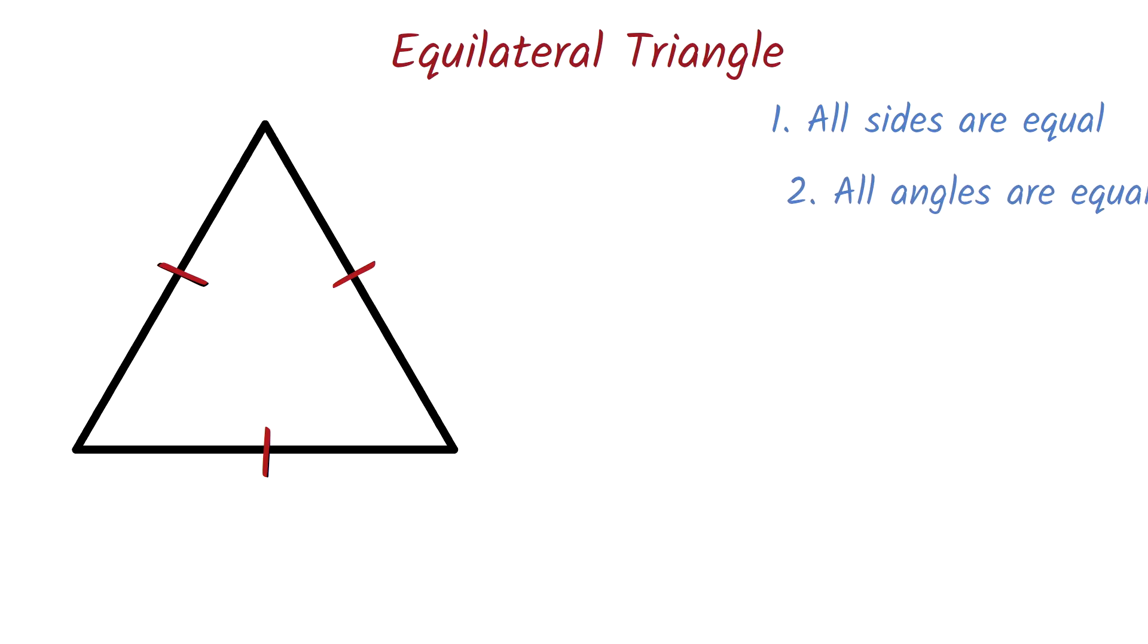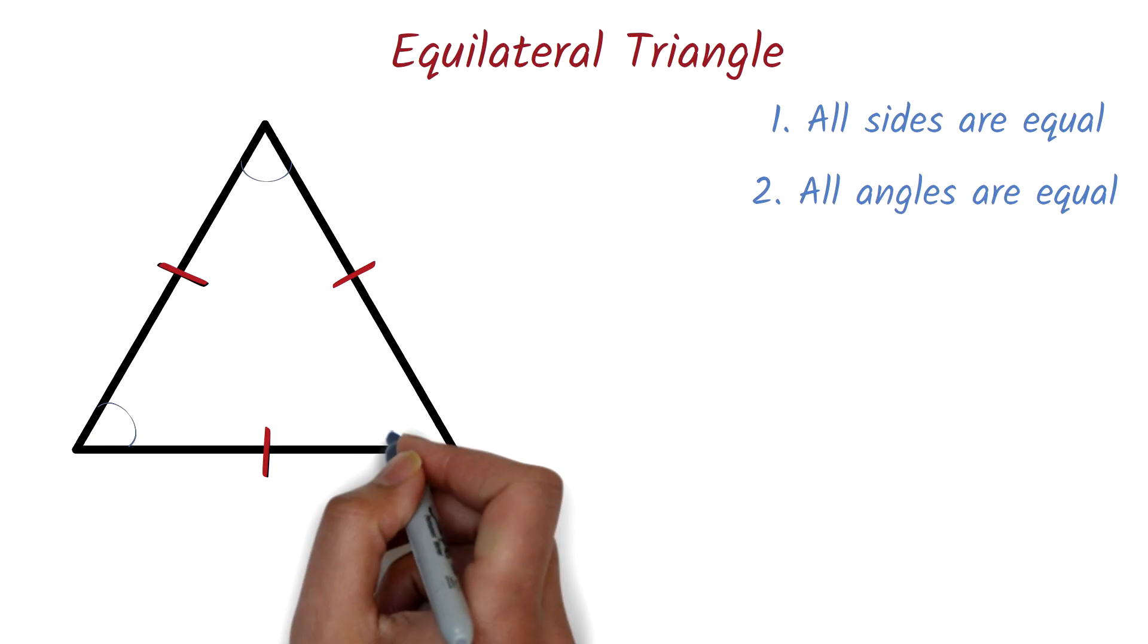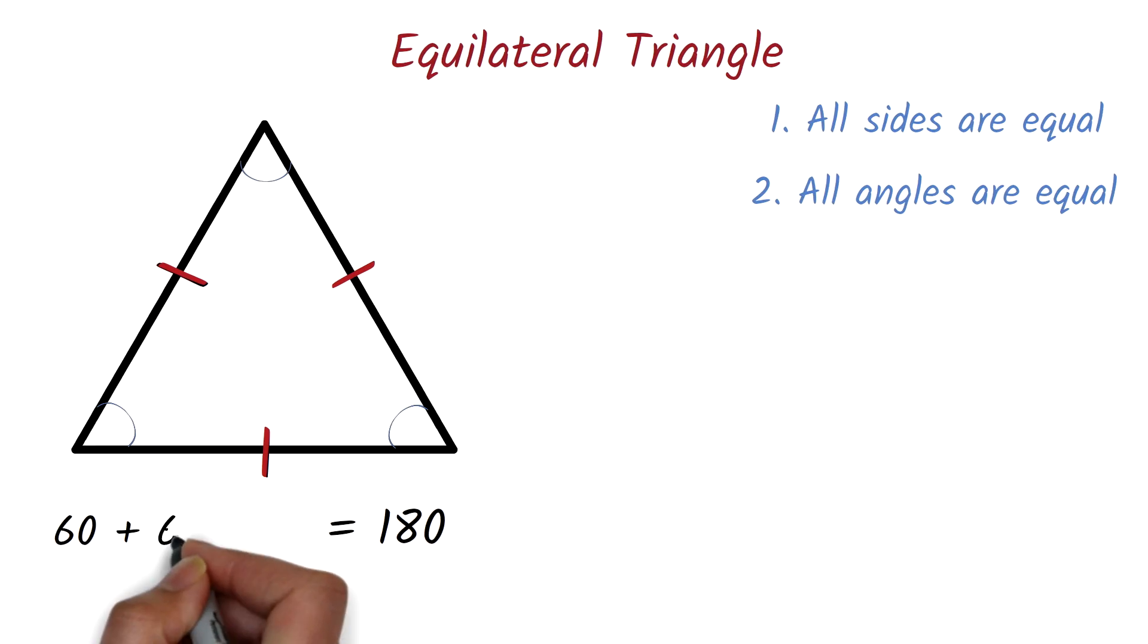All angles are equal. Because all the angles are equal, and all the three angles must add up to 180 degrees, it implies that each interior angle is 60 degrees. Let's show it on the figure.